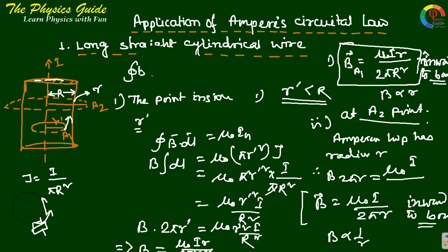If we plot a graph of B versus r, inside the wire B increases linearly proportional to r, and outside the wire B decreases proportional to 1 over r.